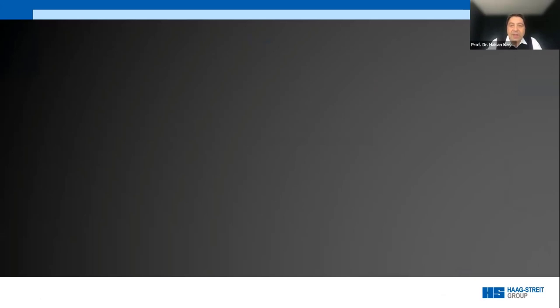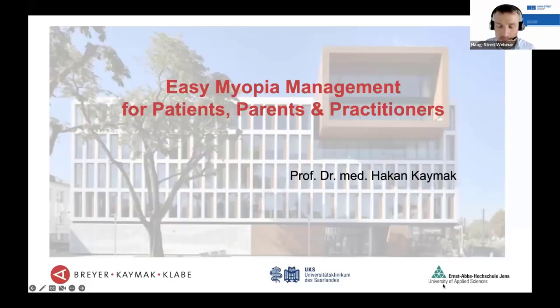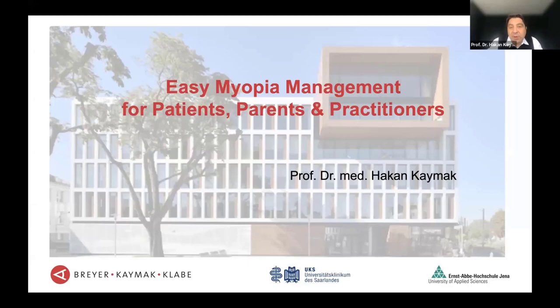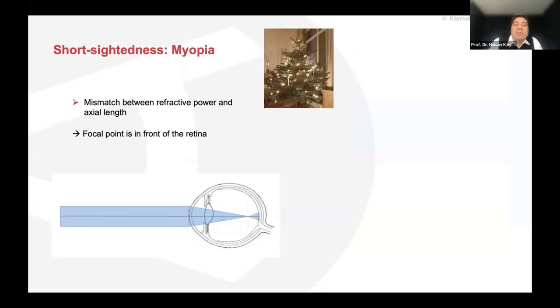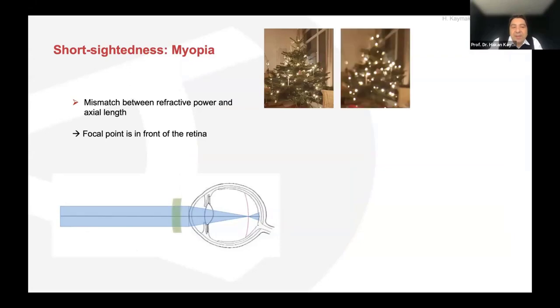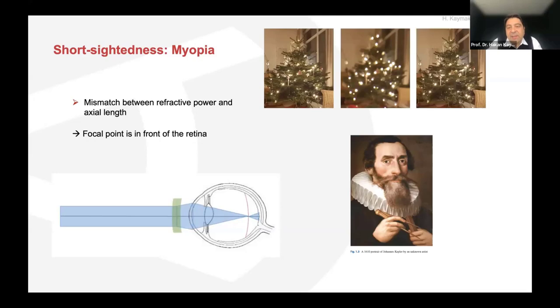Thank you for the possibility to talk about myopia. Myopia comes from the Greek word 'myopes', meaning pinching the eyes to get a sharp image when children look at distance — this is the pinhole effect. We all know that short-sightedness causes myopia: there is a mismatch between the refractive power and the axial length of the eye, so the focal point falls in front of the retina. Johannes Kepler was the first to describe this, now 400 years ago.